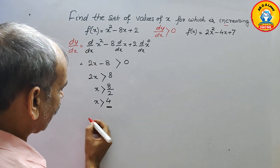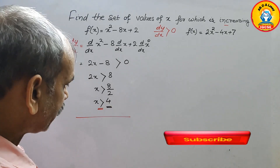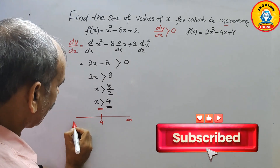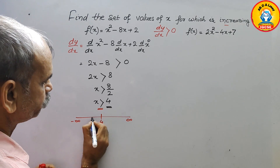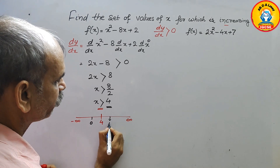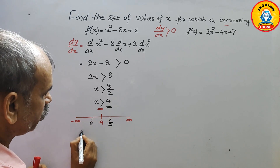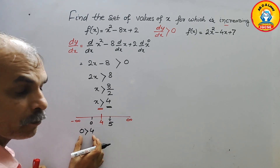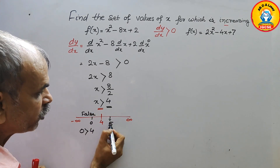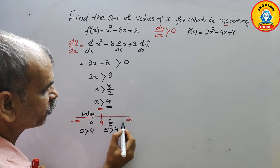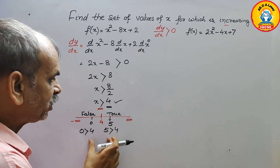To verify, we use the number line method. We set x = 4, placing it on the number line with infinity to the right and minus infinity to the left. We test two points: x = 0 and x = 5. Substituting 0: is 0 > 4? That is false, so we do not take this region. Substituting 5: is 5 > 4? That is true. So x is greater than 4.